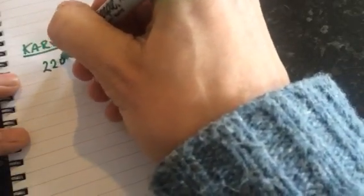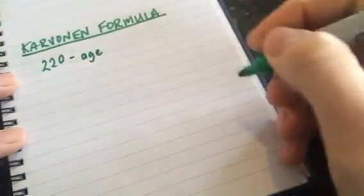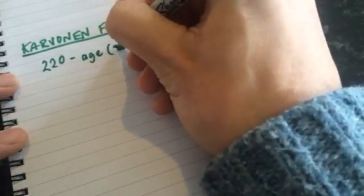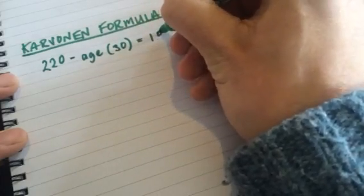What we need to start with is this number 220, which is the same as our maximal heart rate method, and we take away our age. For that one, I'm 30, so I'm going to take away 30, which is of course going to equal 190.